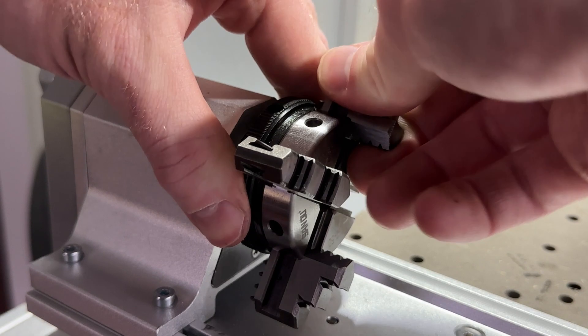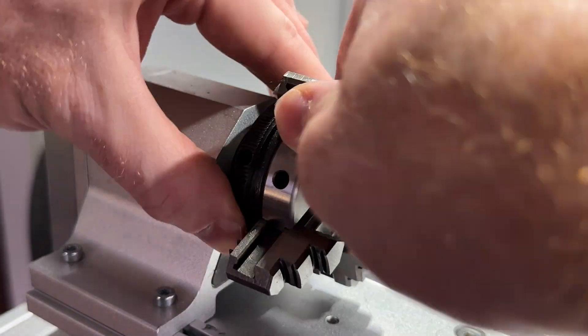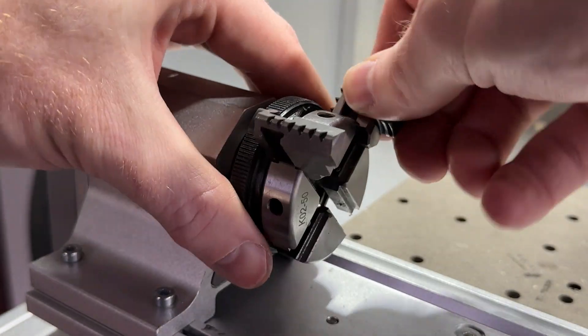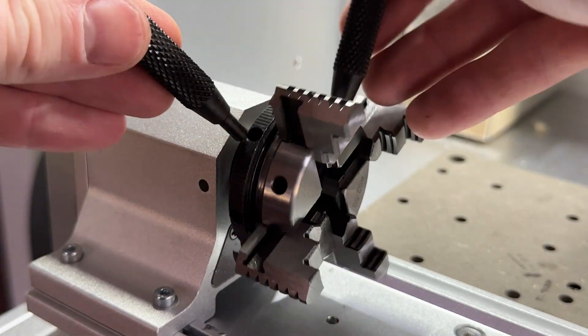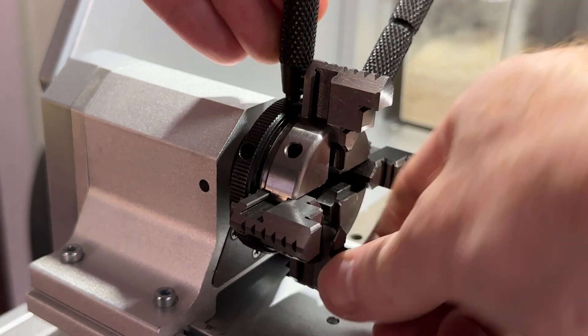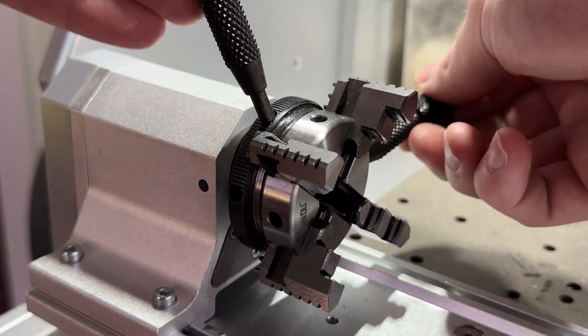For the alternate configuration, which holds smaller stock, we must load the jaws from one to four. For the default configuration, which holds larger stock, we must load the jaws from four to one. As you load the jaws, you may need to wiggle them by hand to first seat them and thread them onto the chuck.